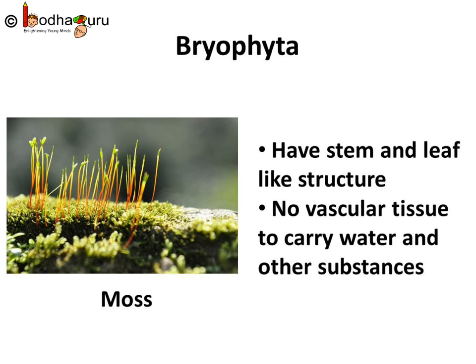Have you seen the moss plant? The body part is differentiated to form stem and leaf-like structures. However, there are no specialized tissues for carrying water and other substances from one part of the plant body to another — that is, xylem and phloem vascular tissues are absent. So they are given a different group named Bryophyta. Plants belonging to this division are called Bryophytes.